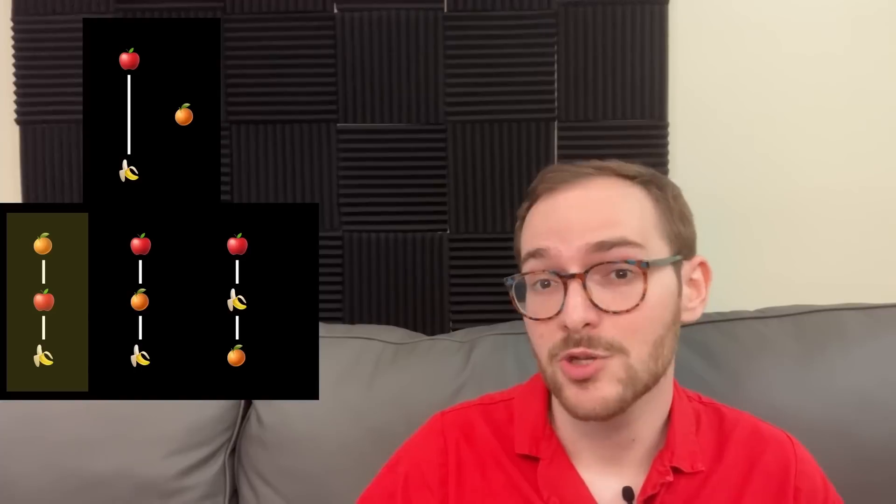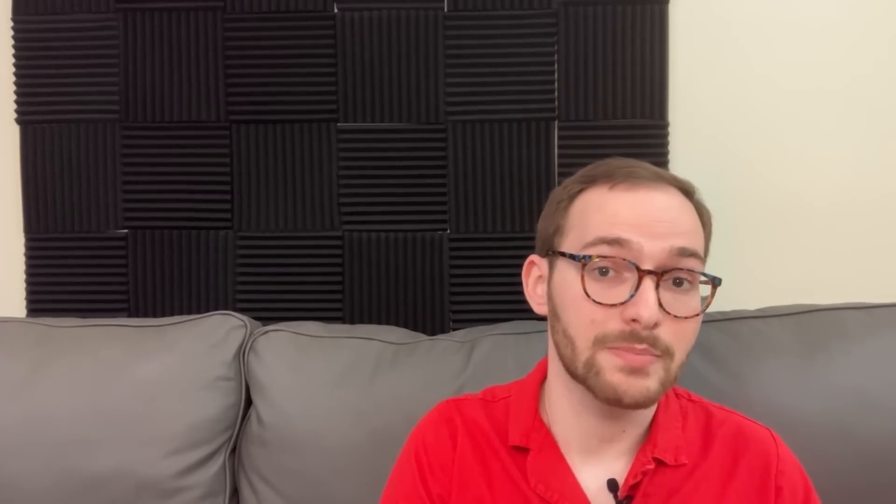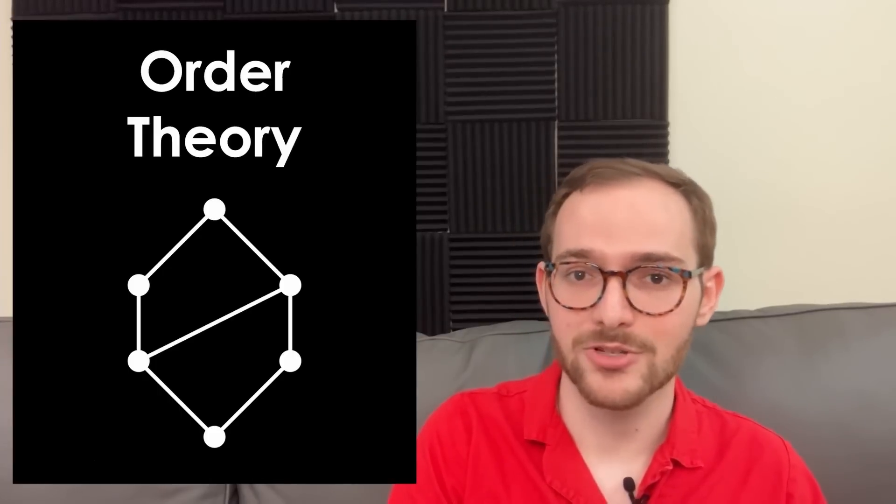We can see that I prefer oranges over apples in only one out of the three possible rankings, although some would say I shouldn't compare them. So this means there's a one-third chance that I prefer oranges over apples. This kind of problem is a part of order theory, the mathematical study of comparison.